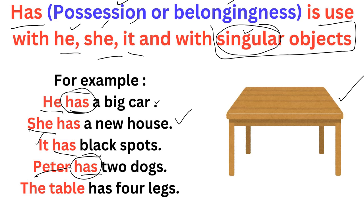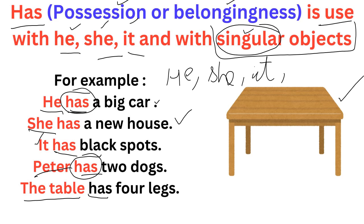'The table has four legs.' Has is used here because we are talking about one table — singular object ki baat ho rahi hai. So, where do we use has? With he, she, it, and with the singular objects.